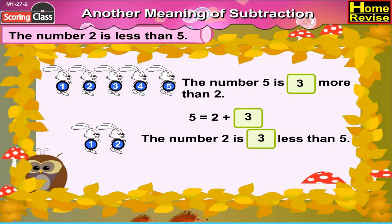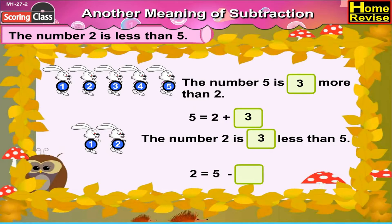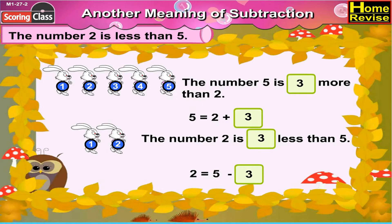Now, 2 is equal to 5 minus how many? Yes, 3. So it means that 2 is equal to 5 minus 3.